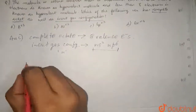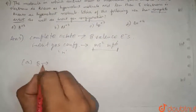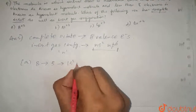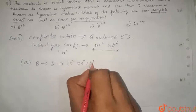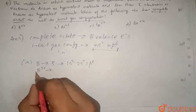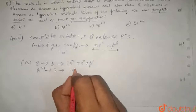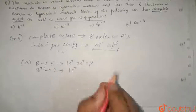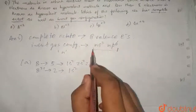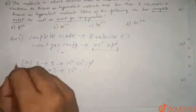Let's write all the configurations and see if these conditions are satisfied. The first option is boron (B³⁺). Boron's atomic number is 5, so its electronic configuration is 1s², 2s², 2p¹. Since B³⁺ means boron has lost 3 electrons, 5 minus 3 equals 2 electrons remain. So the configuration is 1s². The valence shell does not have 8 electrons and is not Ns², Np⁶, so this will not be our answer.